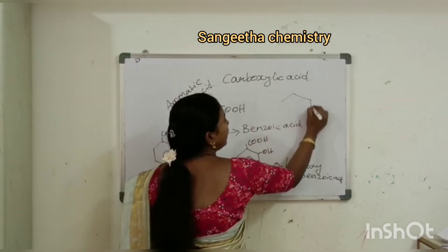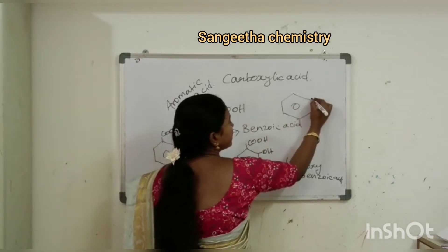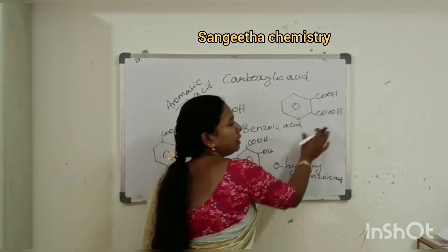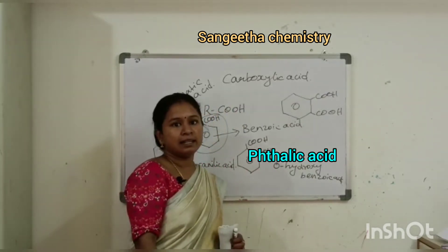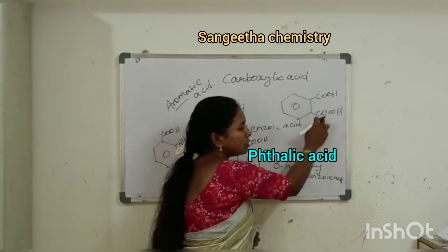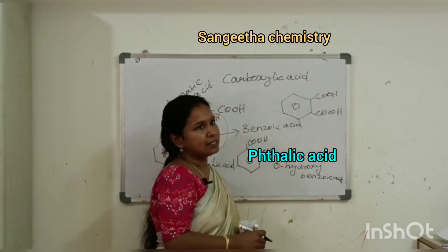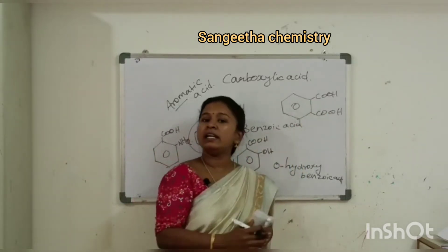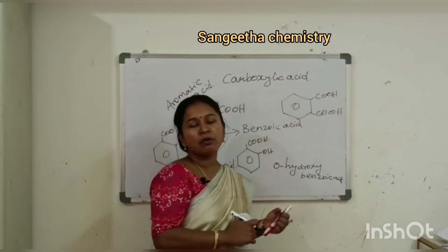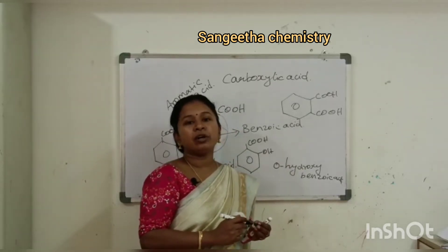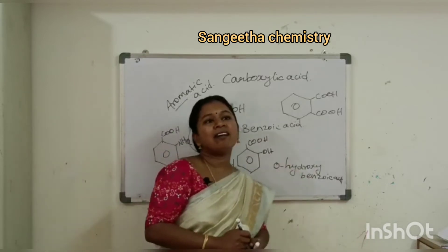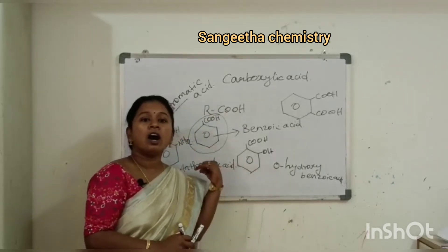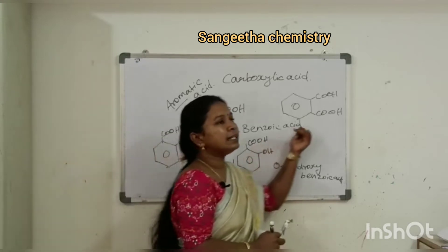Another example is phthalic acid, which has two carboxylic groups. It is a good example of aromatic dicarboxylic acid. So our examples are: benzoic acid, ortho-hydroxybenzoic acid, anthranilic acid (ortho-aminobenzoic acid), and phthalic acid.